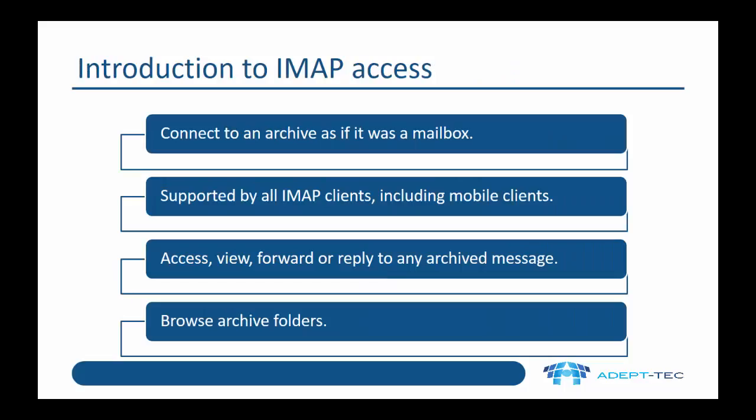One of the ways to do it is to use IMAP. Using IMAP, you connect to your archive as if it was a mailbox. This is supported by all IMAP clients, which includes a wide range of mobile clients. With this, you can access, view, and forward or reply to any archive message, and you can also browse through your archive folders. So it's very flexible.